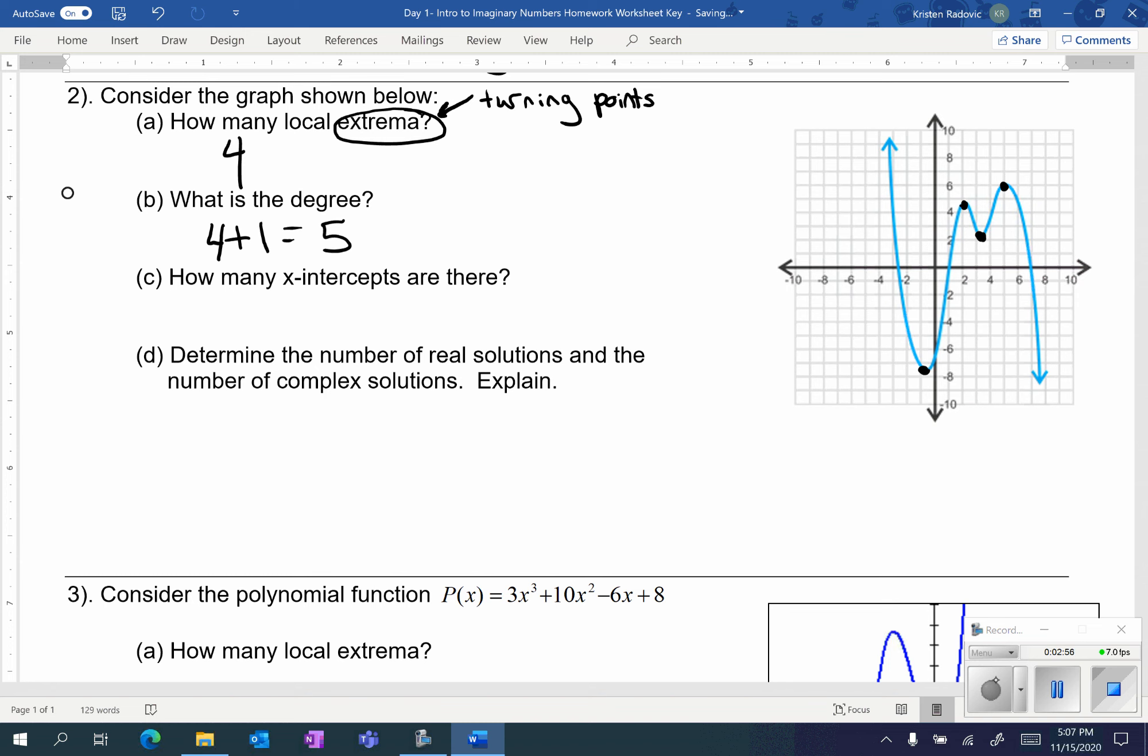And keep in mind it makes sense that we have the degree of five here because five is an odd degree. And odd degrees have arrows going in opposite directions, which we have here. The left arrow is going up and the right arrow is going down.